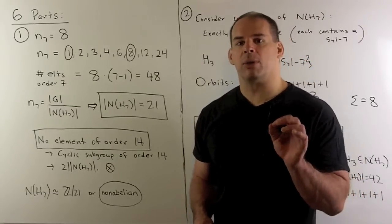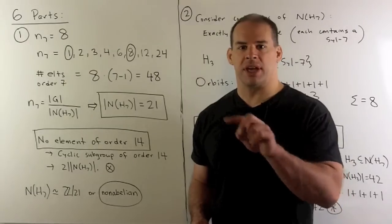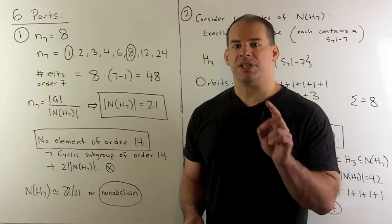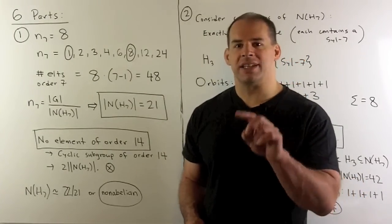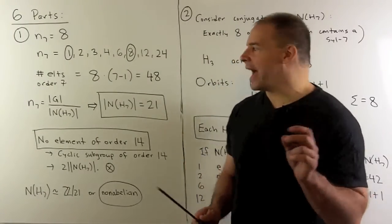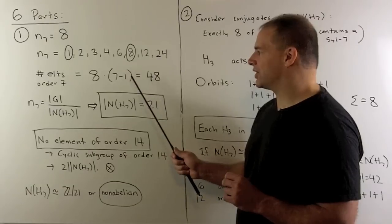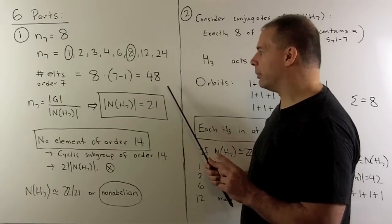Next, we can count the number of elements of order 7. If we take any two Sylow 7 subgroups, they're cyclic groups of order 7. Since 7 is prime, they intersect in either the identity element or the entire Sylow 7. So, that means we have 8 subgroups times 6 elements. We throw away the identity element, and that gives us 48 elements.